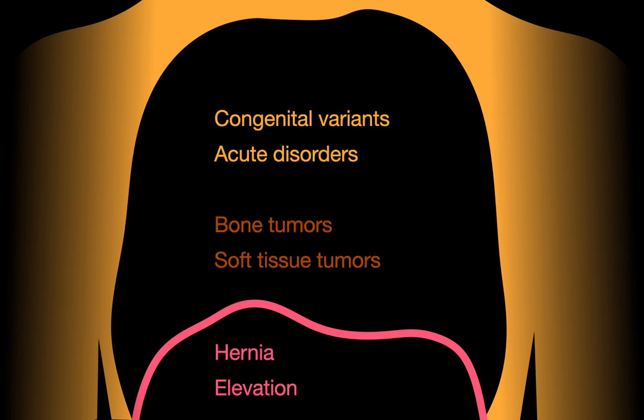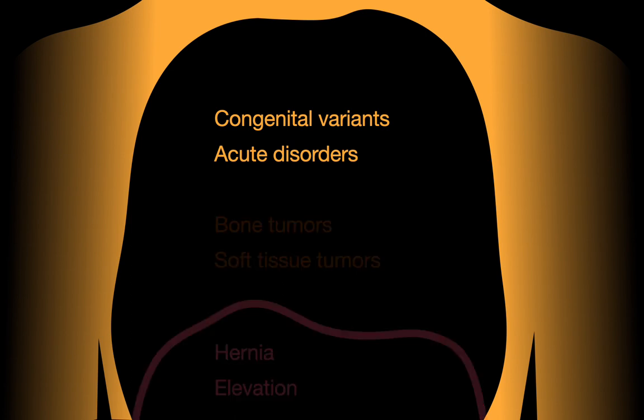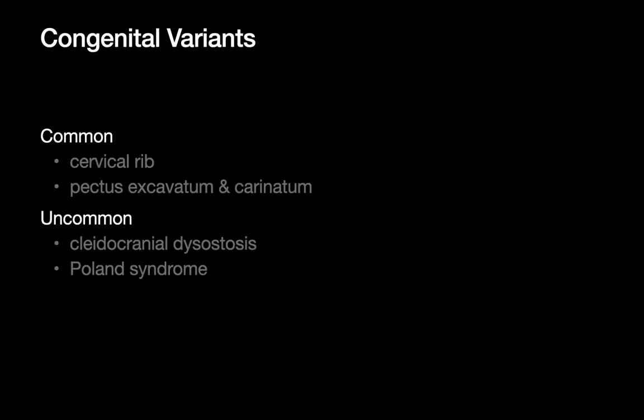The two non-neoplastic types of chest wall disorders we'll cover are congenital variants and acute chest wall issues. The two neoplastic groups will be bone tumors and soft tissue tumors. The two diaphragmatic disorder categories will cover hernias and elevation. Let's talk about non-neoplastic chest wall disorders, starting with congenital variants.